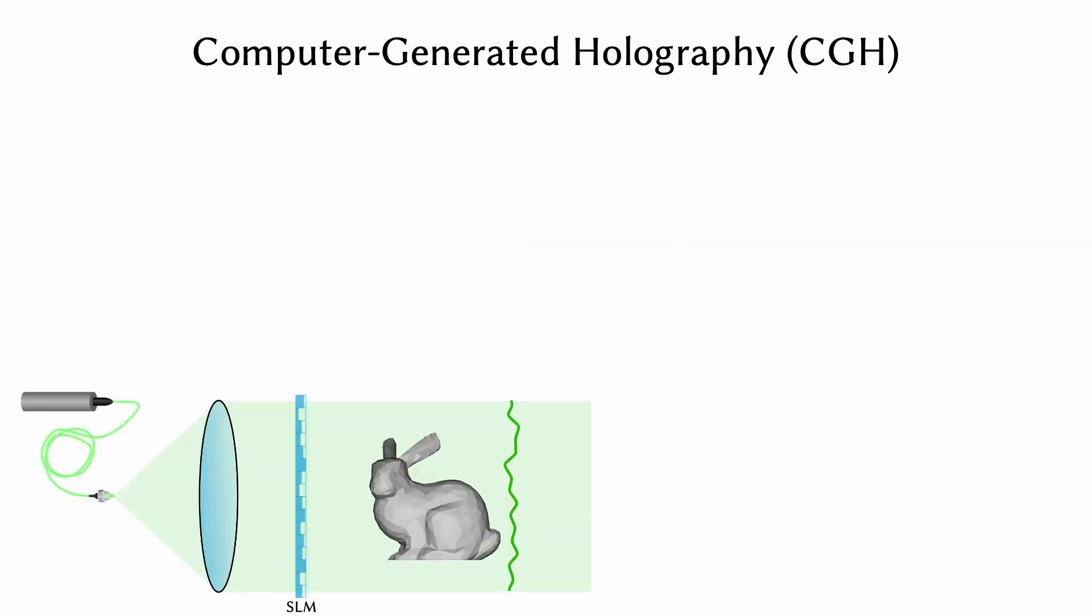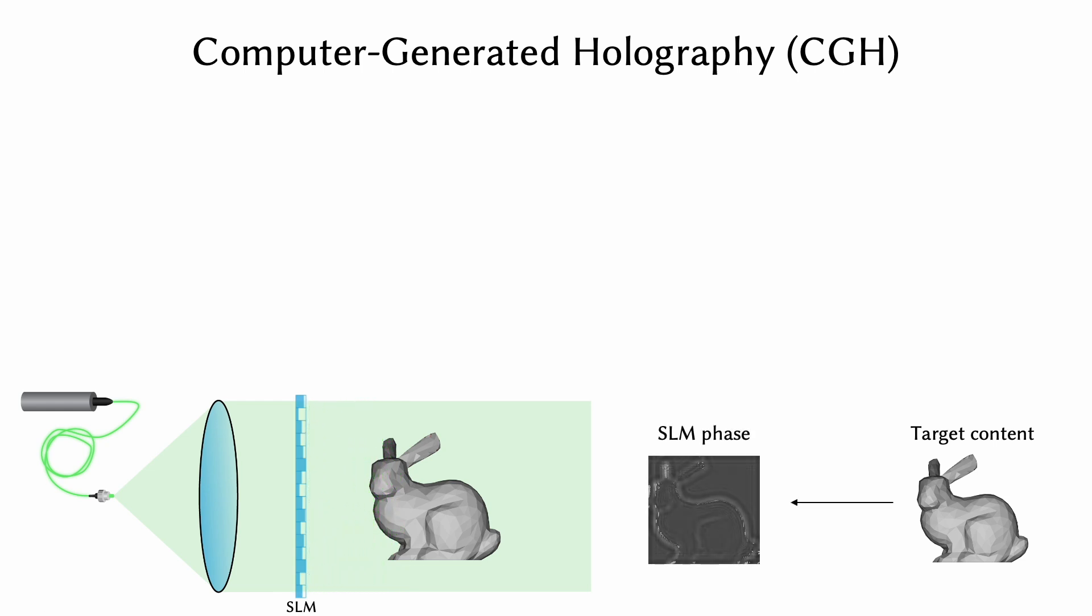At the core of emerging holographic displays is computer-generated holography, or CGH. CGH algorithms convert 3D scenes into 2D interference patterns that can be displayed on a spatial light modulator.